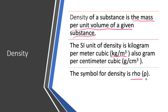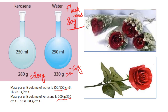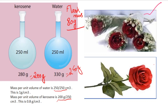Now see the examples for density. Looking at two figures with the same volume, one container has one rose and another has four roses. The one with four roses is denser — it is more tightly packed, meaning it has more density.